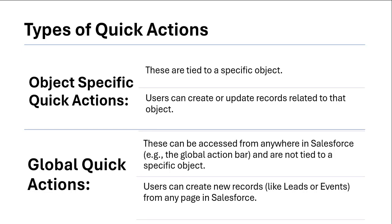Global quick actions can be accessed from anywhere in Salesforce — for example, from the global action bar. Global quick actions are not tied to a specific object, meaning a user can create new records like leads or events even when those objects are not related to any particular object.